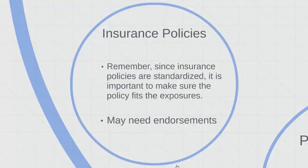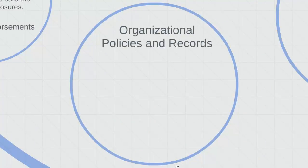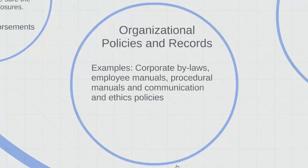Next, an organization should look at organizational policies and records to help identify loss exposures. For example, corporate bylaws, employee manuals, procedural manuals, and communication and ethics policies all potentially could help to identify loss exposures. Employee manuals that violate laws could create a liability situation for an organization. Obviously, there are different issues for small businesses when it comes to organizational policies and records, since smaller organizations, especially those with fewer than five employees, may not have any organizational policies or have a very limited number of them. Having organizational policies and keeping organizational records will tend to result in a risk reduction rather than a risk increase.